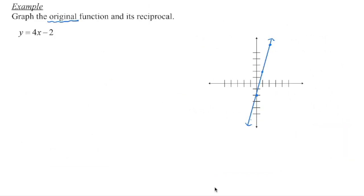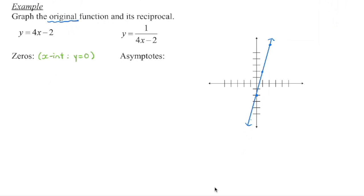In this lesson we're going to look at how to take the reciprocal of a linear function. Starting with a linear graph: I can see the y-intercept is negative 2 and the slope is 4. We plot y-intercept negative 2, go up 4 and over 1, and so on to get that line. The reciprocal function becomes 1 over 4x minus 2. First we identify where the asymptotes lie — the asymptote occurs when the denominator equals 0. The x-intercept of the original function occurs when x equals one half.